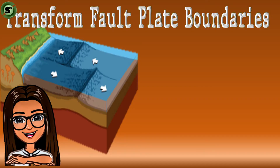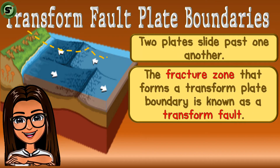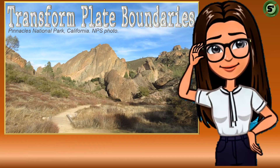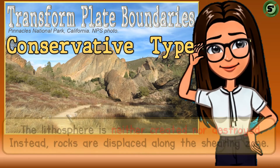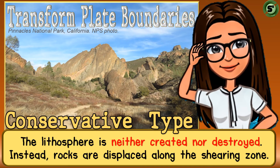Transform fault boundaries happen when two plates slide past one another. The fracture that forms a transform fault boundary is known as a transform fault. Most of the transform faults of the earth are found in the ocean basin. Transform fault boundaries are called the conservative type of plate boundaries because along the sliding plates, the earth's lithosphere is neither created nor destroyed. In this type of boundary, rocks are displaced along the shearing zone.